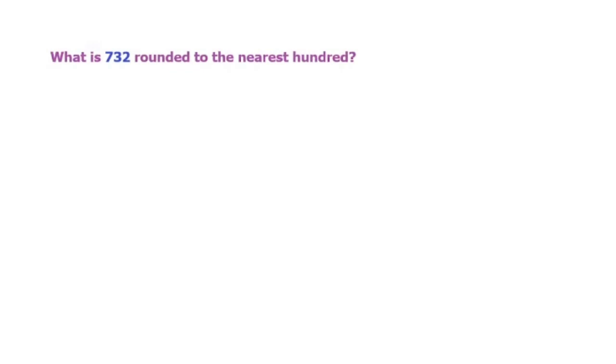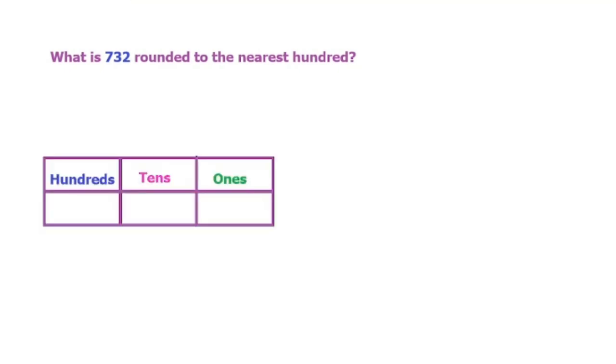In this video we're going to work on rounding. If we have a problem like this that says what is 732 rounded to the nearest hundred, we have to remember what the hundreds, tens, and ones columns look like.